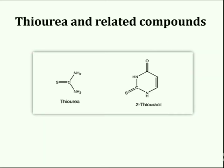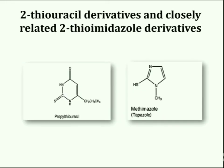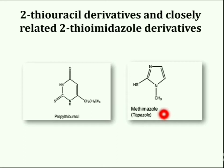Thiourea and related compounds are antithyroid in nature but they are too toxic for clinical use. The useful drug candidates in this category are thiouracil derivatives and closely related compounds. Propylthiouracil is a thiouracil derivative, while methimazole is also a thiouracil derivative.